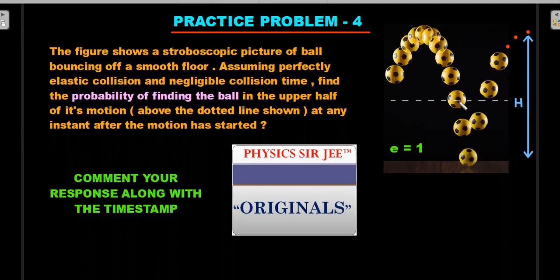You can see a stroboscopic picture of a ball under elastic collisions, so it's a projectile motion of a ball. It hits the floor, e equals one, and goes to the same height again, and so on and so forth. So when this continuous motion is happening with a maximum height of h, imagine you are drawing a dotted line somewhere in the middle dividing the motion into two halves—upper h/2 and lower h/2. Question is very simple: find the probability of finding the ball in the upper half of its motion above the dotted line shown at any instant after the motion has started.